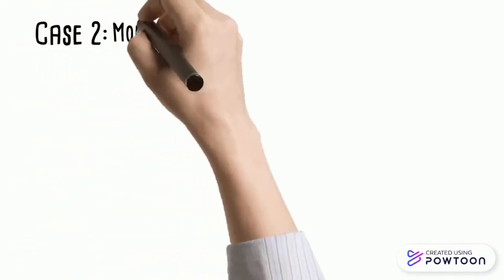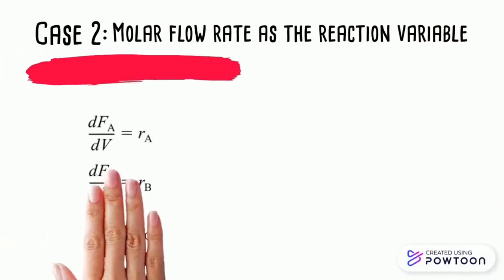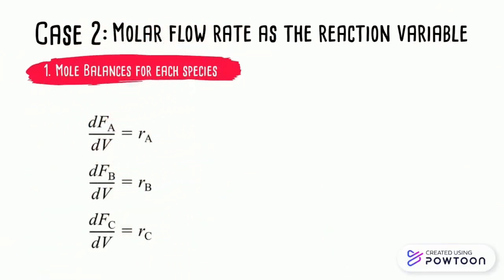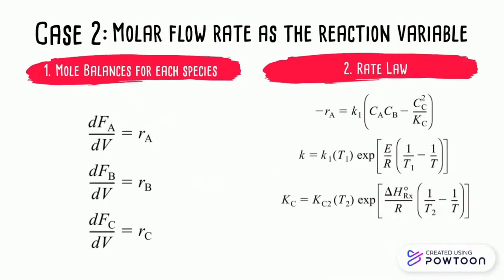Now, let's look at case 2, molar flow rate as the reaction variable. We would need the following equations instead. First off, we need the mole balances for each species. Then, we need the rate law which is the same as the previous case.